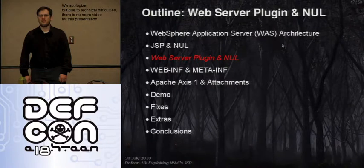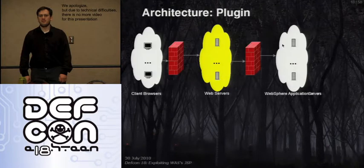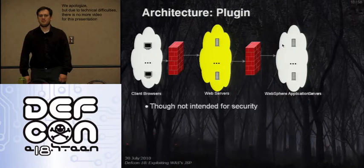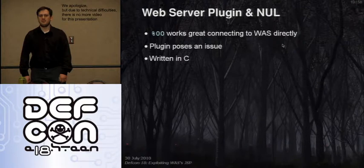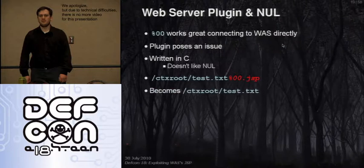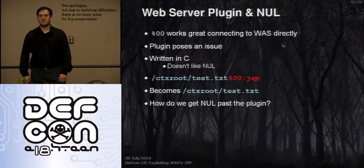In most instances of WAS, you're not going to see direct connections that aren't going through the plugin or some sort of proxy. The plugin wasn't really designed for security, but in some cases it gets in the way of insecurity too. Going for a null byte in WAS is easy, but the plugin is written in C and really doesn't like the null character. It terminates your string — instead of getting test.txt%00, you get test.txt, which WAS then just tries to serve out as a normal static file. So the next challenge is figuring out how to get nulls past the plugin.